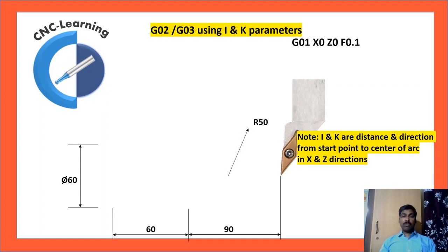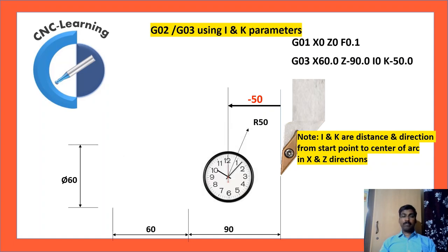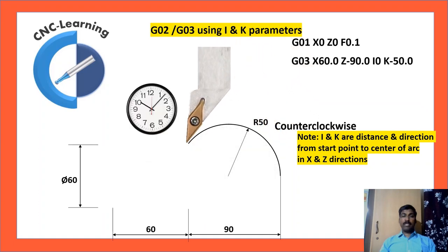So now the tool is positioned in X0, Z0. Then the center definition in Z-axis, it is minus 50, start point to center. The center lies in the left side, that is why it is minus. So the command is G03, X60, Z minus 90, I0, K minus 50.